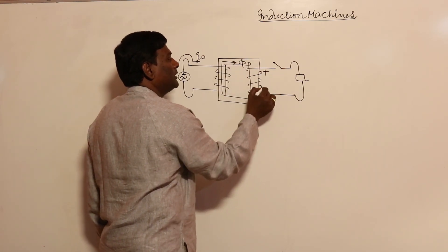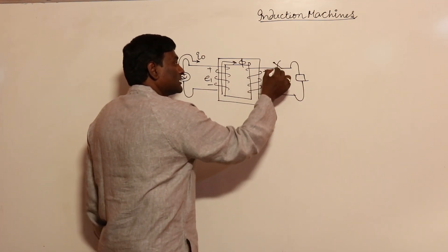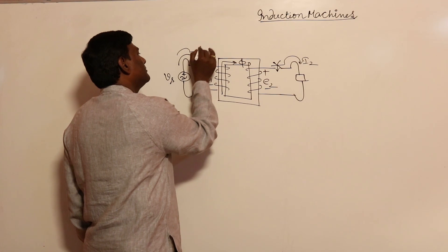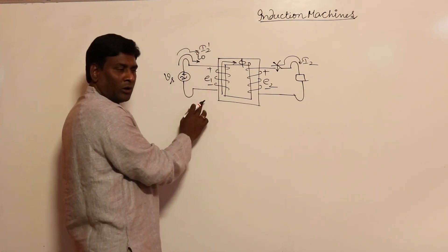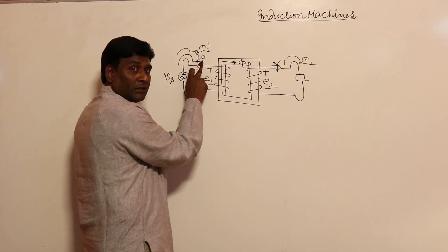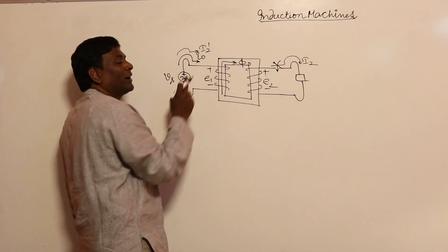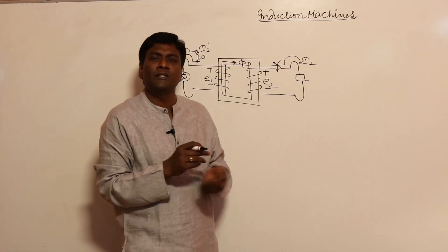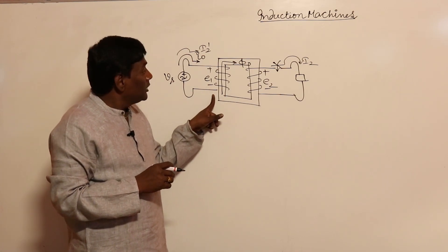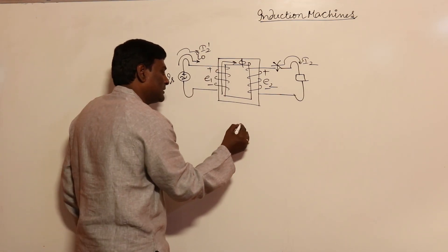That flux induces voltages in the secondary. When the switch is closed, secondary current i2 flows, and the reflected current i2-dash flows in the primary. So the primary — analogous to the stator of an induction machine — takes no-load current to set up flux and also carries the reflected load current. There is only one winding doing both jobs.